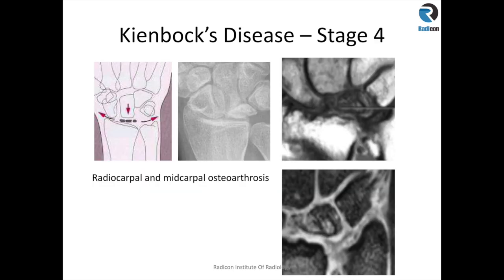Stage 4 is when the lunate undergoes irreversible fragmentation and collapse — it's broken into pieces — and then you get radiocarpal and midcarpal joint osteoarthrosis or osteoarthritis due to advanced Kienböck's disease, as demonstrated on this plain radiograph. On MR, you get fragmentation, collapse, and secondary osteoarthritic changes between the lunate, capitate, and radius, as demonstrated here.